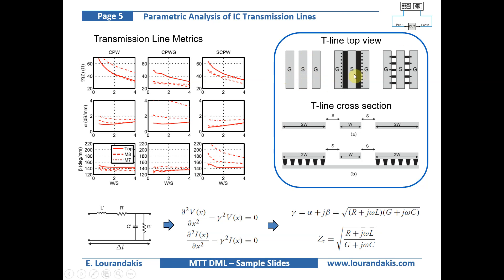In the middle we have the coplanar waveguide with an additional ground plane below the signal path, and on the right the shielded coplanar waveguide, where the lower ground plane is a shield structure rather than a massive ground plane with solid metal.